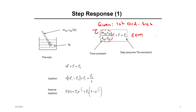Given the equation of motion and the initial condition T at 0 equal to T0, this is given. How do I know this is a first-order system? Look at the differential — this is the first differential, so this is a first-order system. The forcing function is the bath temperature, which is a step function, meaning it is a constant.